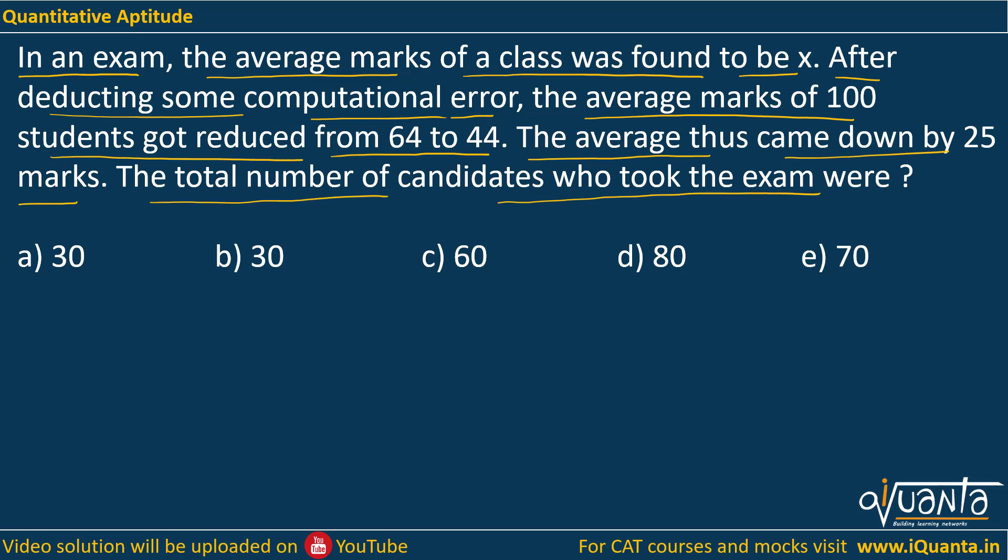Let us assume that the number of students in the class was N. Since we are talking about the average, you know what is average - average is sum of all observations upon number of observations.